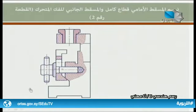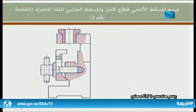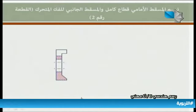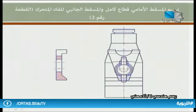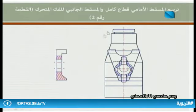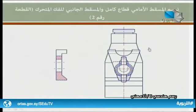يجب أن نبحث عن القطعة رقم 2 من الرسم التجميعي. هذه هي القطعة رقم 2، فعلينا حذف جميع الخطوط الأخرى لتبقى مسقط القطعة رقم 2 قطاع كامل. وكذلك الأمر بالنسبة للمسقط الجانبي للفك المتحرك أي القطعة رقم 2، إذ المطلوب فقط رسم مسقطها الجانبي.